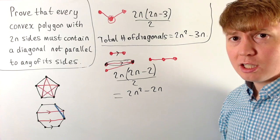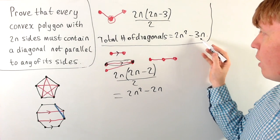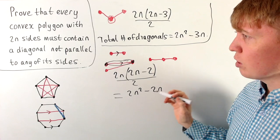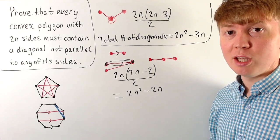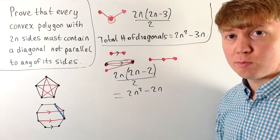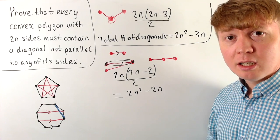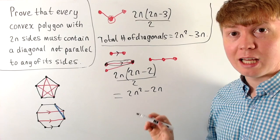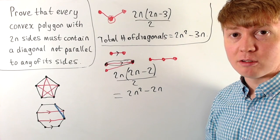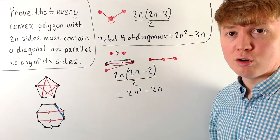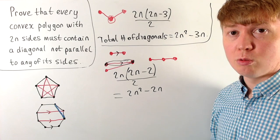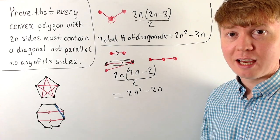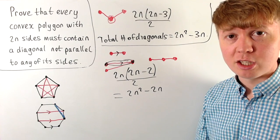Unfortunately, this upper bound of 2n² minus 2n is actually bigger than our total number of diagonals, 2n² minus 3n. So we have an upper bound for the number of diagonals which could be parallel to any of the sides, but at the moment it's too large — bigger than the total number of diagonals. We need to refine this upper bound to make it smaller than the total, so that we can prove there must be some diagonals not parallel to any of the sides.